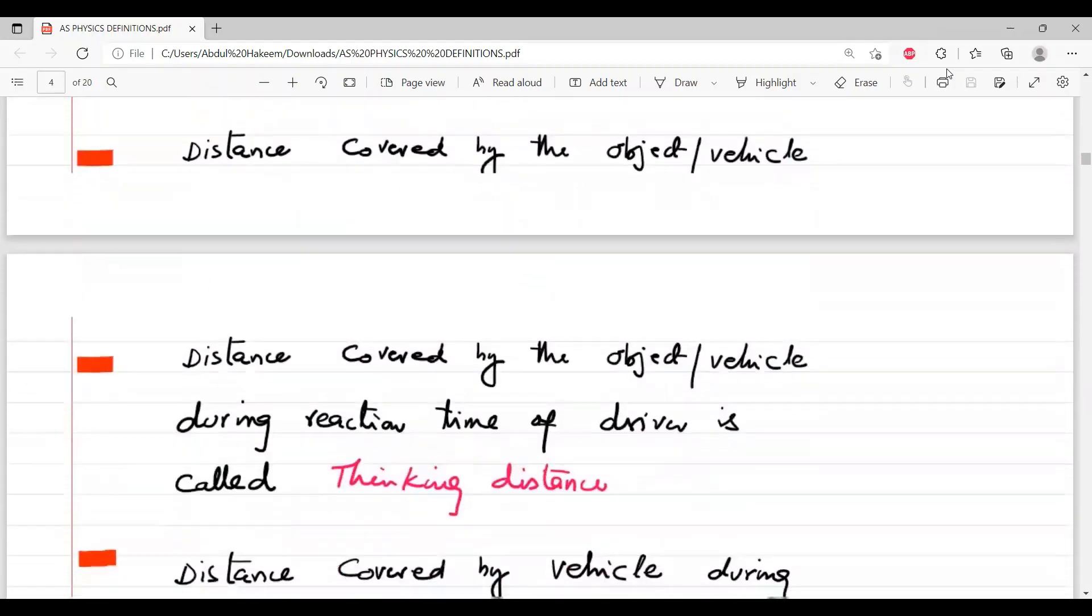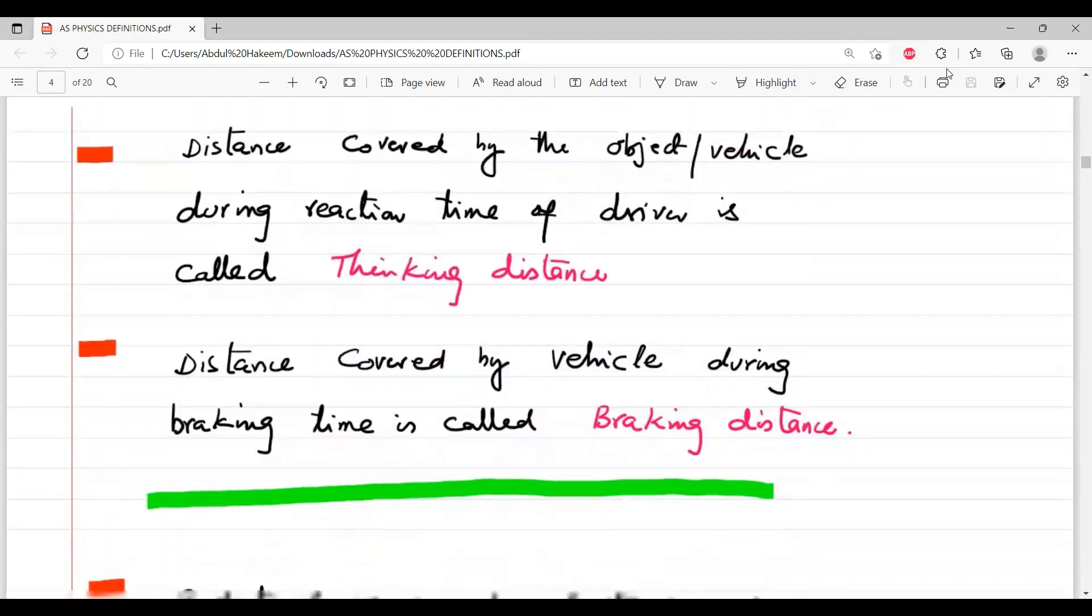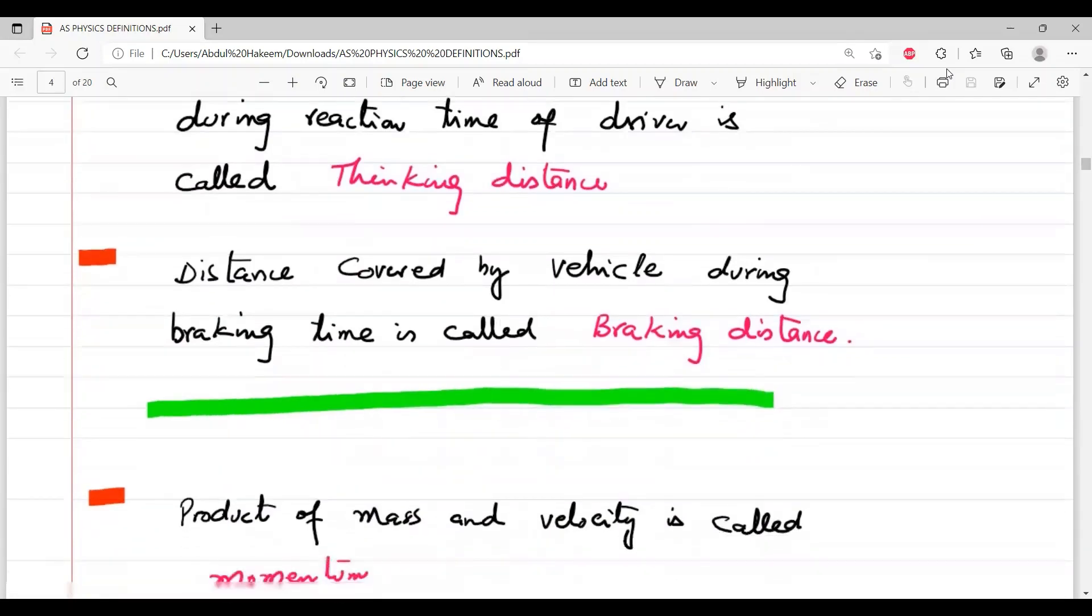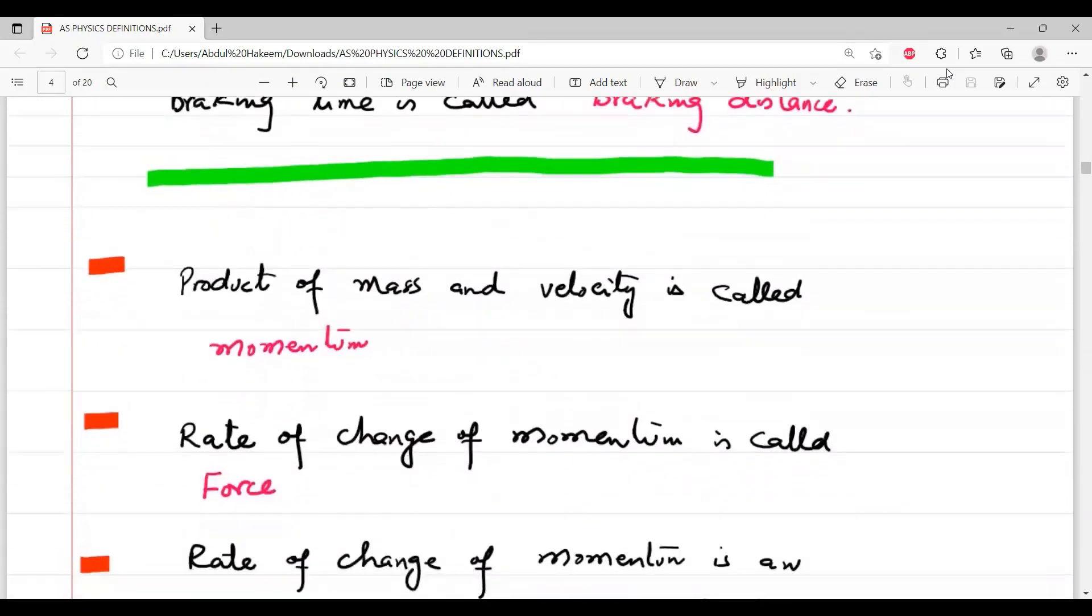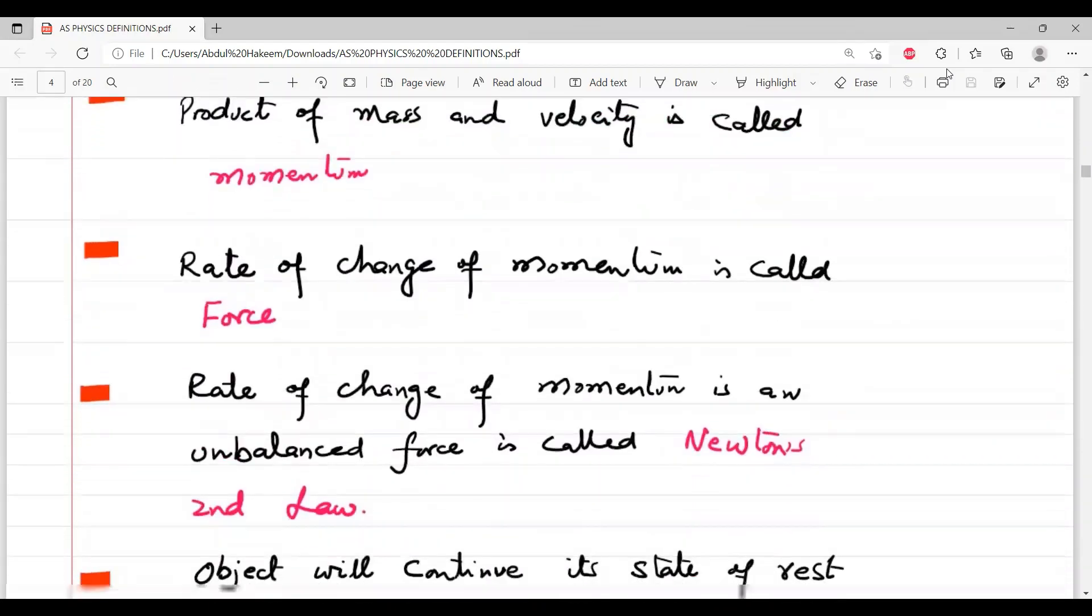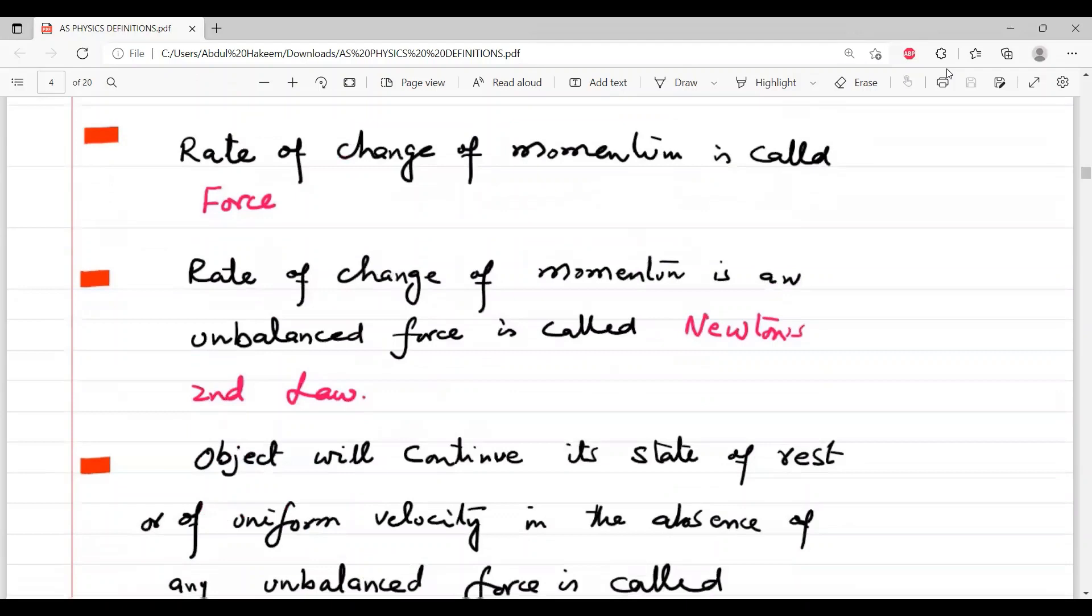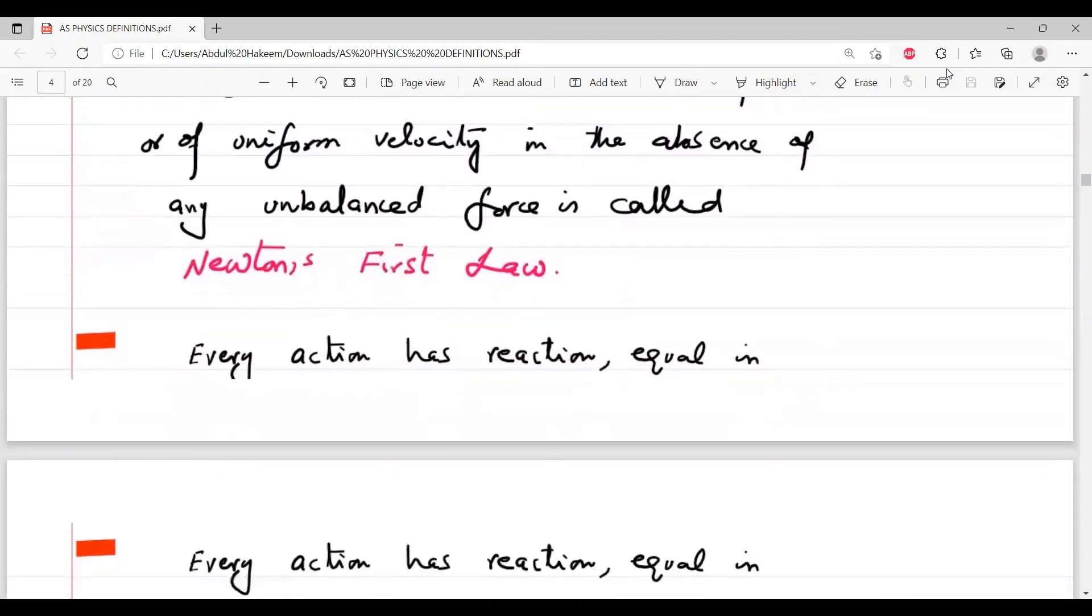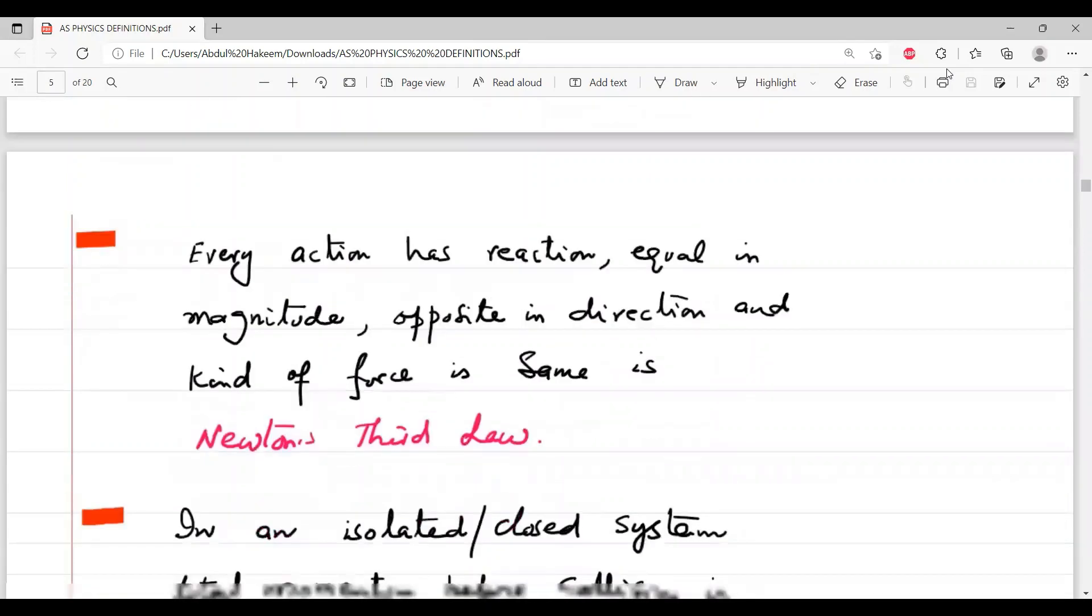Thinking distance, braking distance, and definitely the sum of thinking distance and the braking distance is called the stopping distance. And then momentum, force, and then Newton's second law, Newton's first law, Newton's third law.